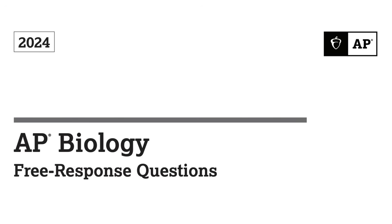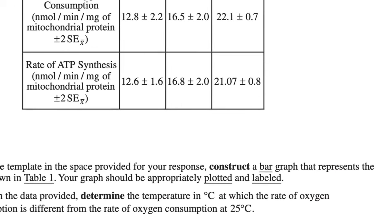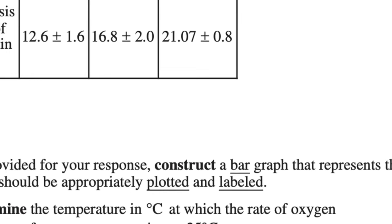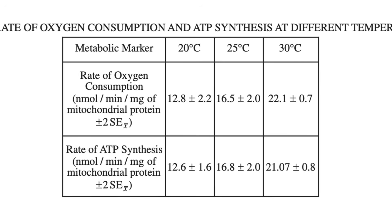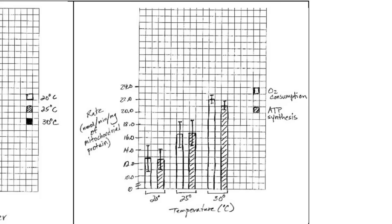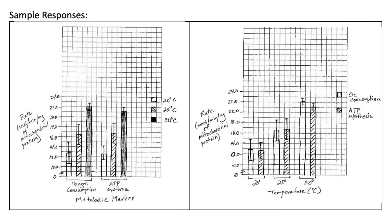Let's take a look at some real-world examples from previous years' exams. In 2024, the exam asked you to construct a bar graph specifically for the data being presented. In this table, you would choose whether to use temperature or the metabolic markers as the major X-axis categories. Choosing temperature, you would have oxygen consumption and ATP synthesis as your two bars within each temperature category. Notice how we're using the exact same units for both bars, and the values we're given to plot all fall within relatively similar ranges.